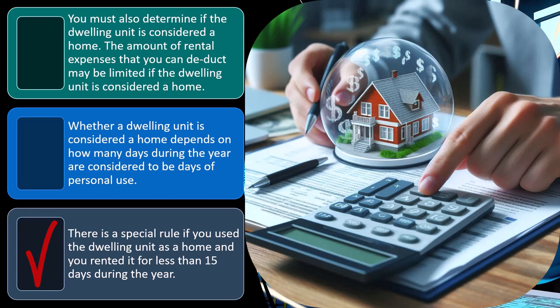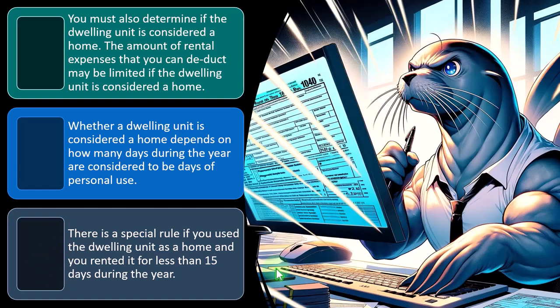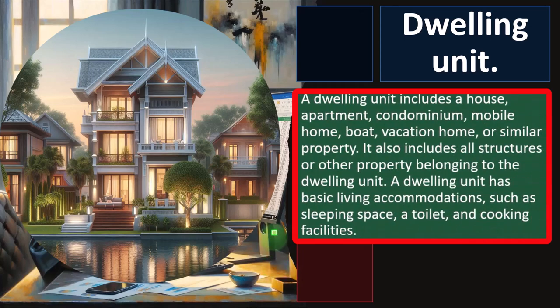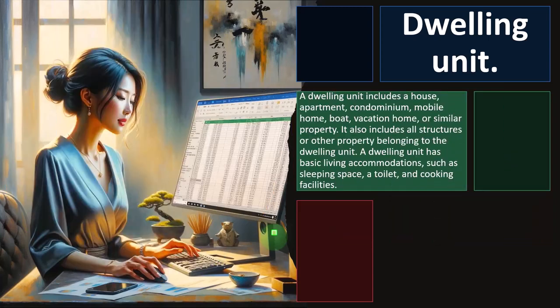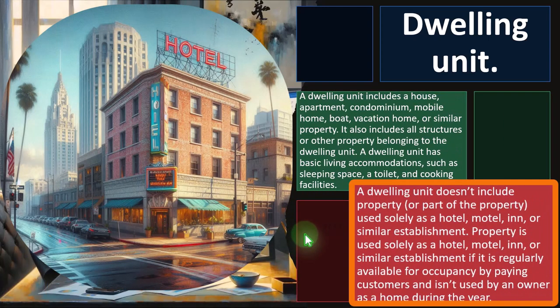A dwelling unit includes a house, apartment, condominium, mobile home, boat, vacation home, or similar property — including all structures belonging to the dwelling unit. A dwelling unit must have basic living accommodations such as sleeping space, a toilet, and cooking facilities. So whether it's a normal house, a trailer, or a boat, you'd expect it to have somewhere to sleep, a toilet, and somewhere to cook.